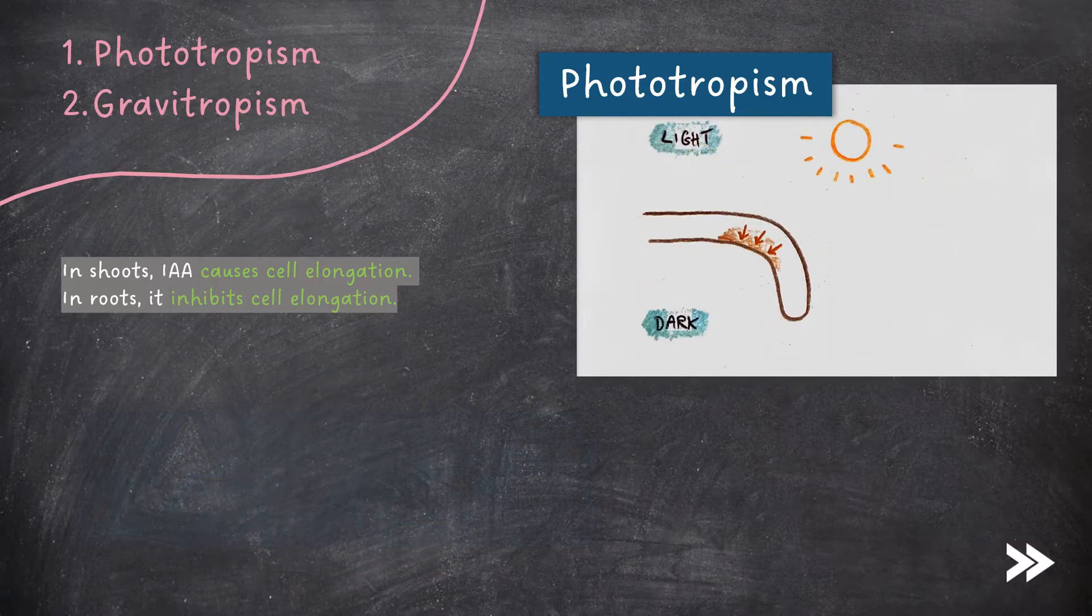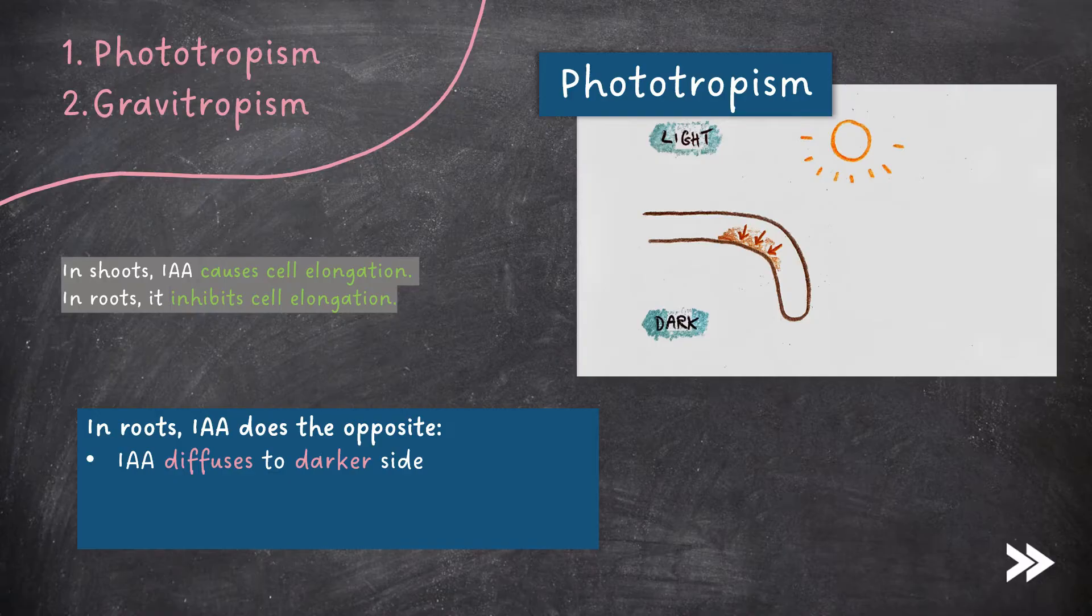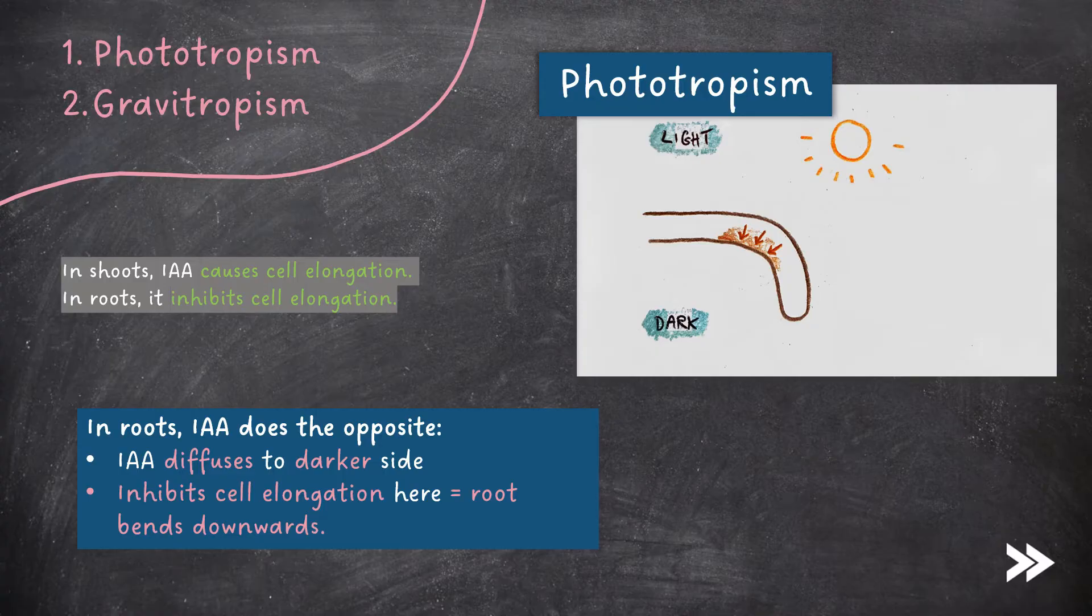Note that in the roots, IAA does the opposite. It diffuses to the darker side, i.e. the underside of the root, meaning that cell elongation is inhibited here, causing the root to bend downwards, and this is known as negative phototropism.